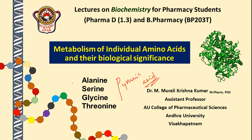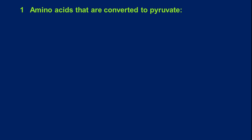We have four important amino acids to cover: alanine, serine, glycine, and threonine. These are the four amino acids we are going to discuss in this lecture session. Let us go ahead and see what exactly is there. The amino acids that are converted to pyruvate.